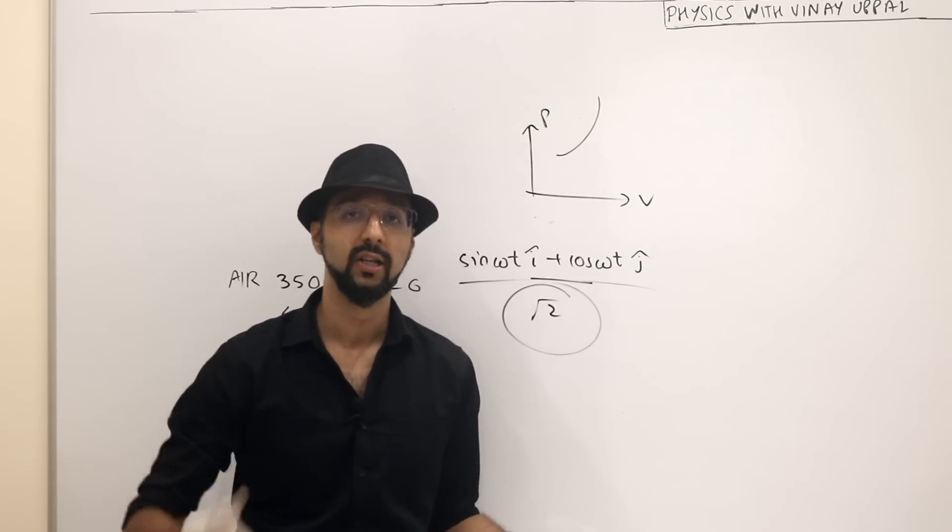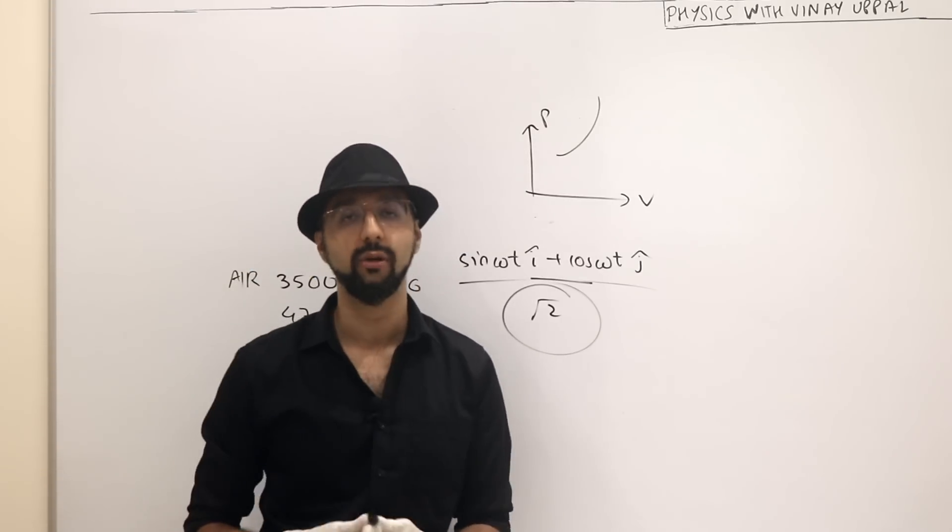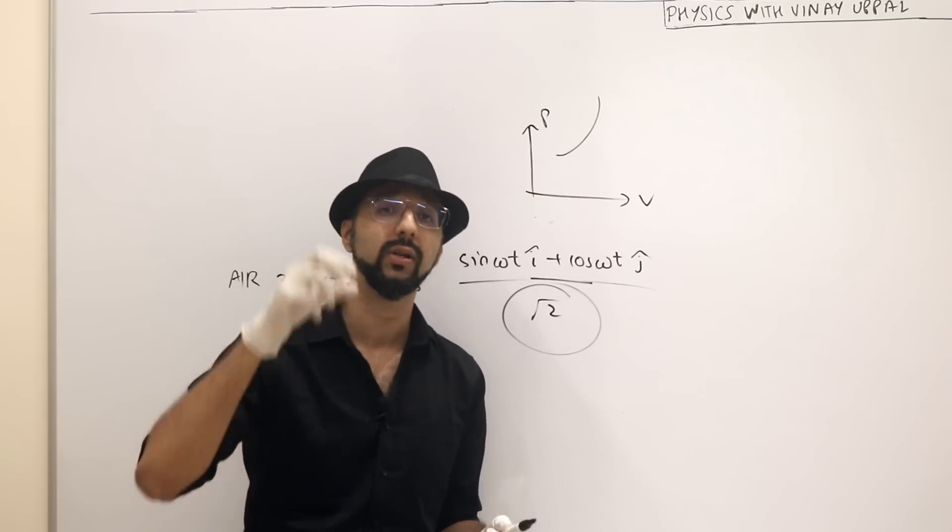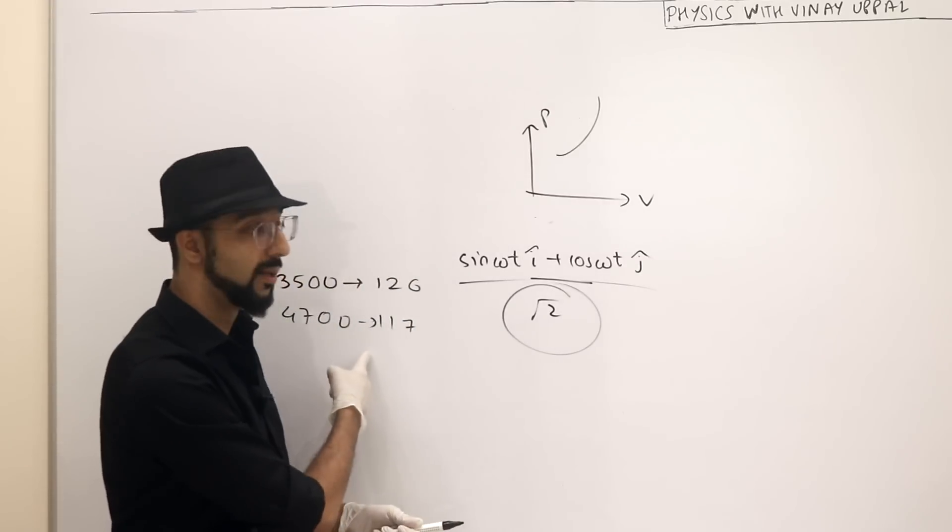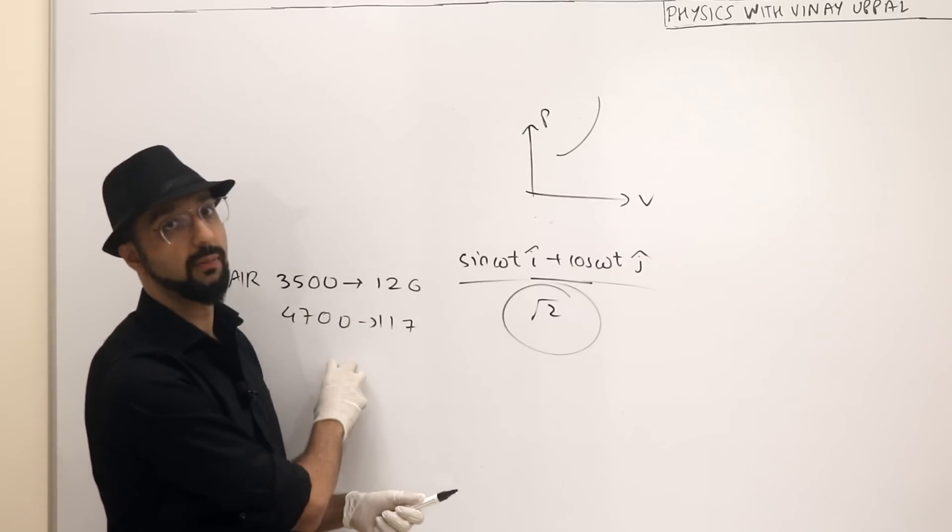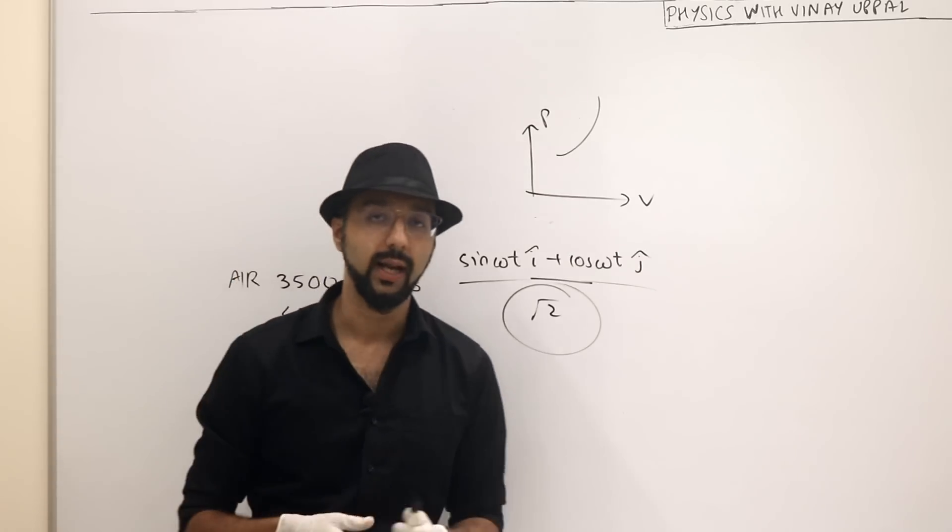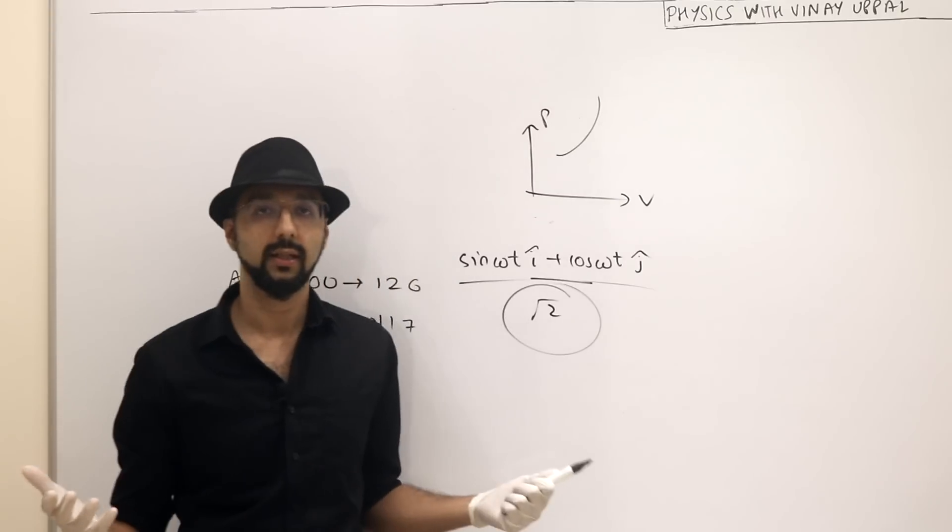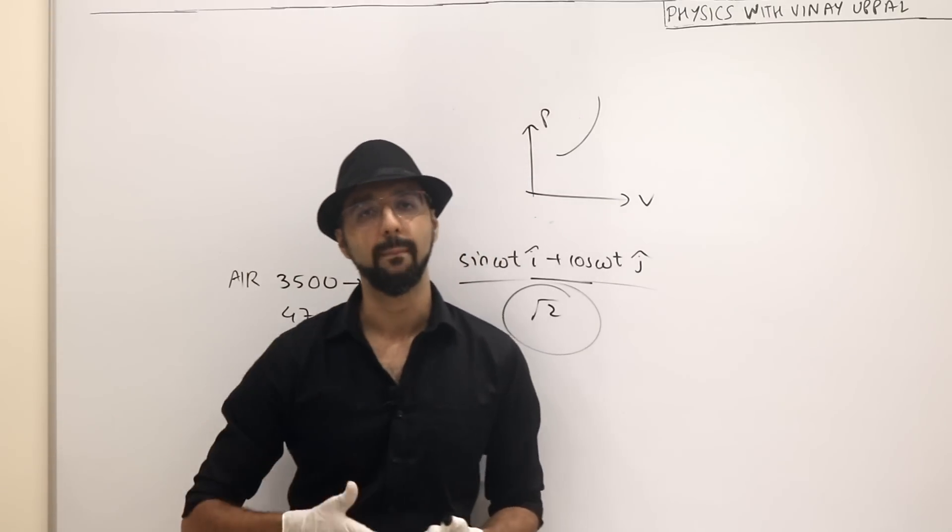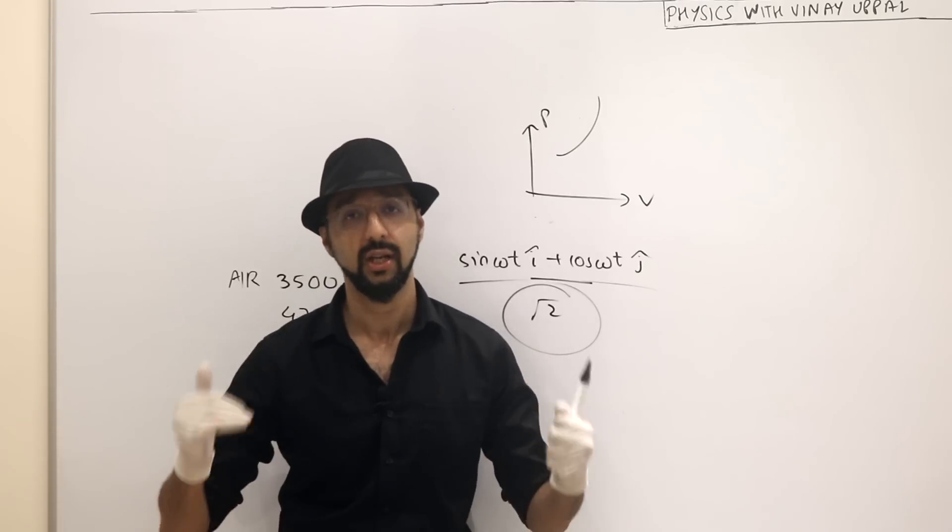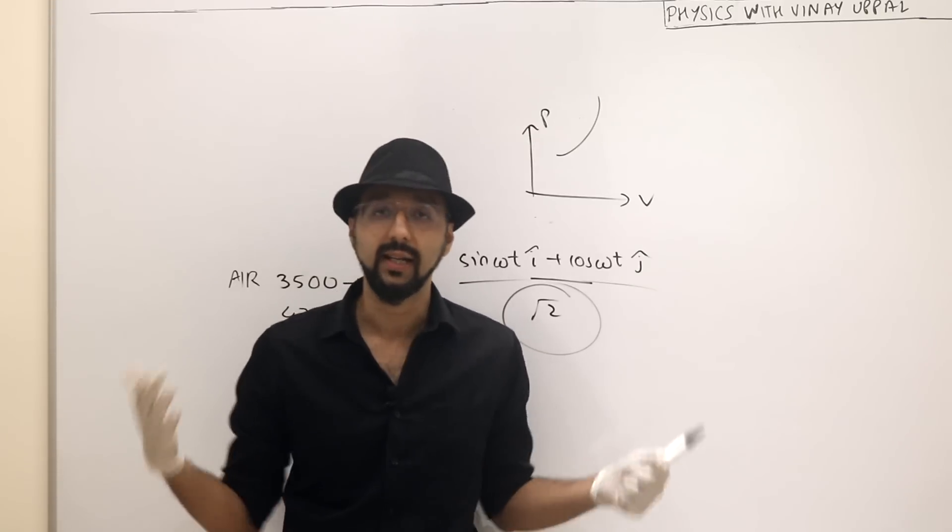So can you imagine, if you are spending that much time on these three wrong questions which everyone will get marks for, you are missing out on three more questions that could have been correct. Potentially you are losing around nine marks. In nine marks, your rank will drop by 1,200 in this region. So it is absolutely shameful that this happens at the national level of JEE Advanced, but it does happen.